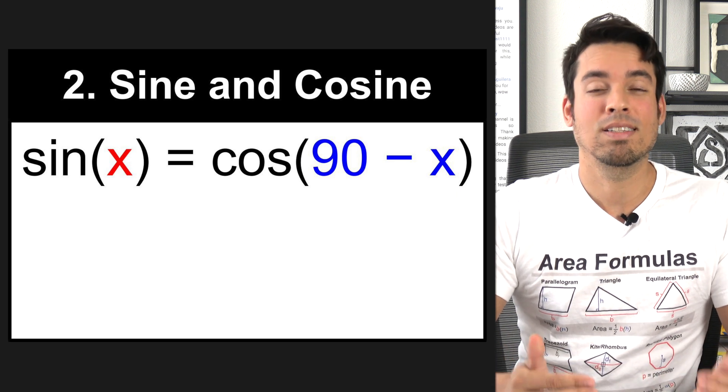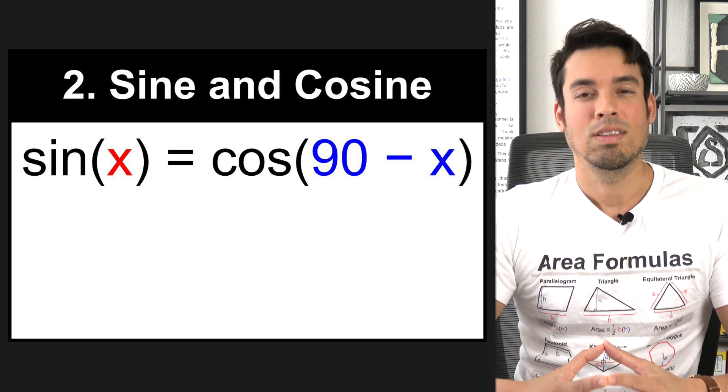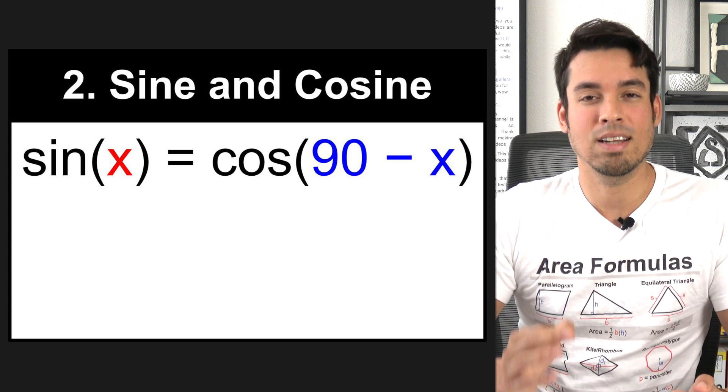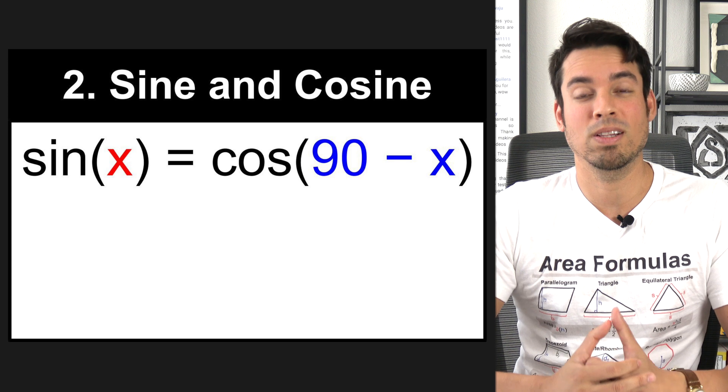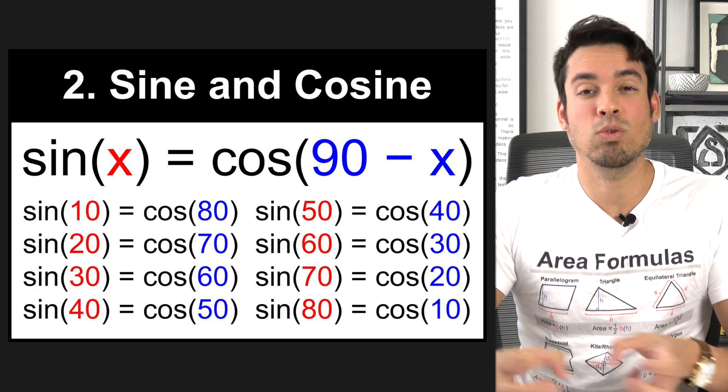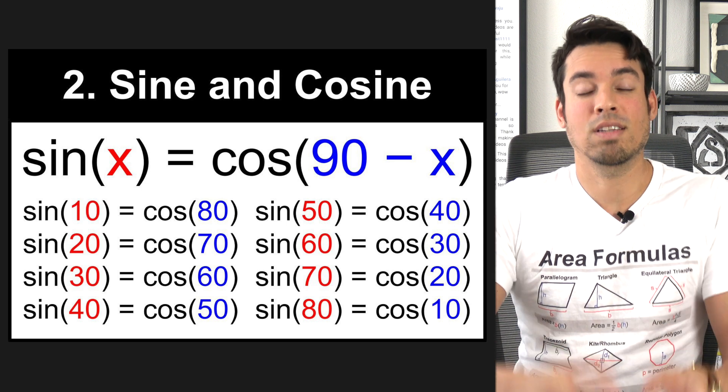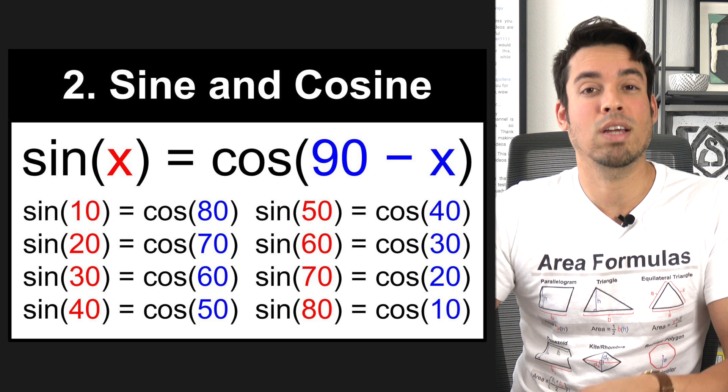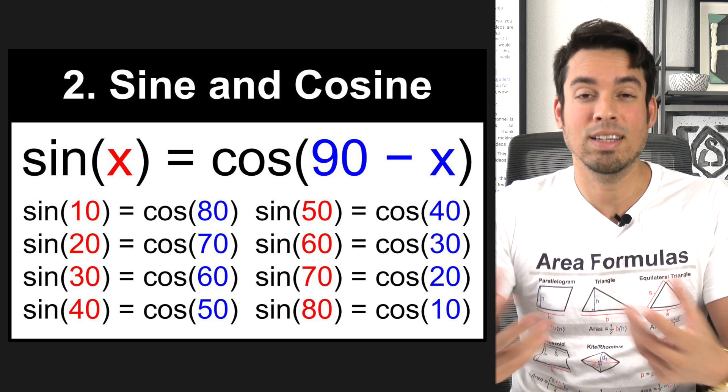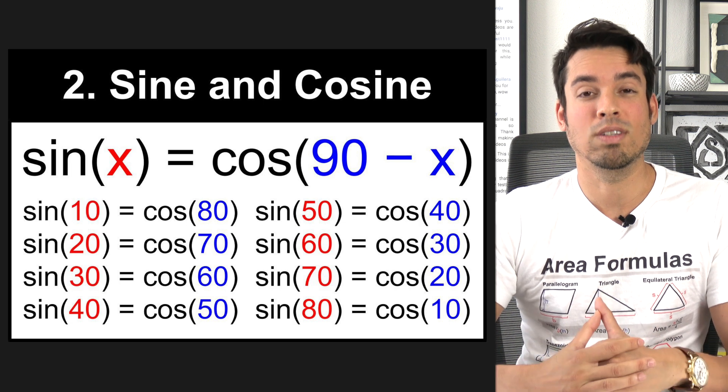It basically means sine of one angle equals cosine of the complement of that angle. The SAT loves to test this concept in particular, so knowing this formula is going to help you tremendously. Here are some concrete examples of actual numbers that would make this a true equation. And of course, you always see sine of an angle always equals cosine of the complement of that angle. And just to refresh your memory, complementary angles are angles that add up to 90 degrees.